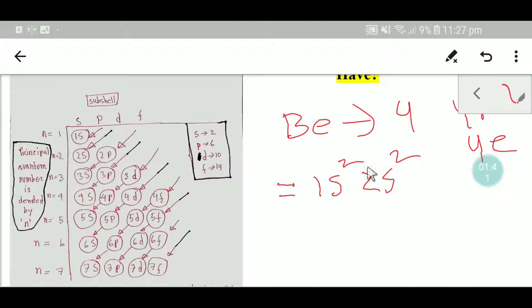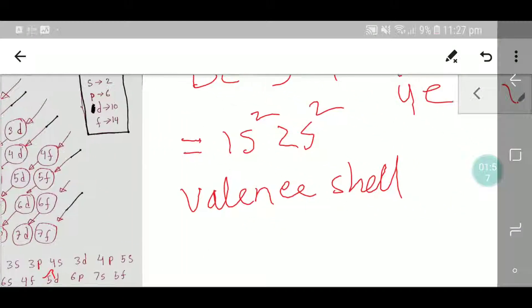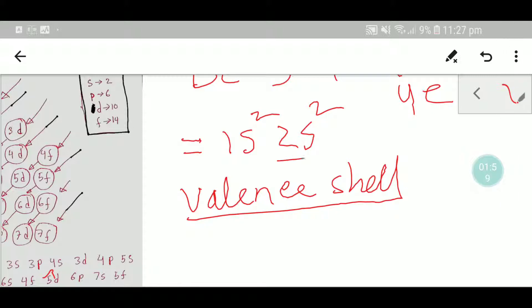Now we need to identify the valency shell. What is the valency shell? The valency shell can be found by the value of n.